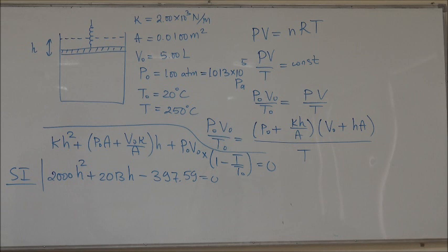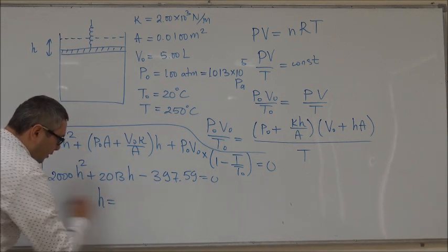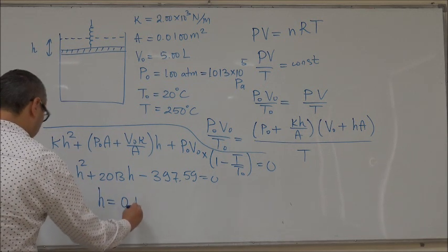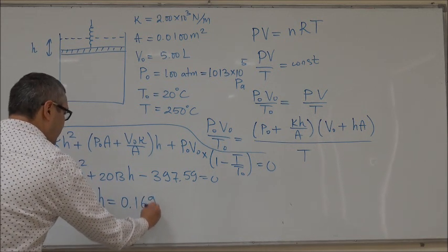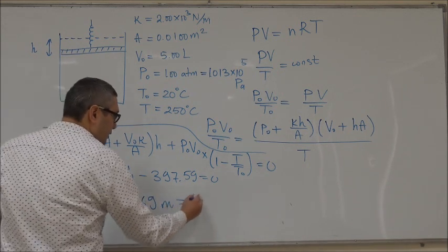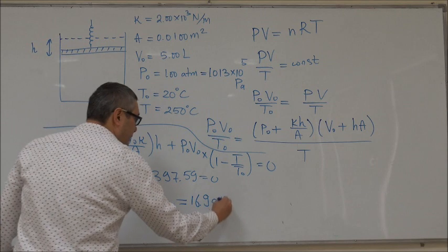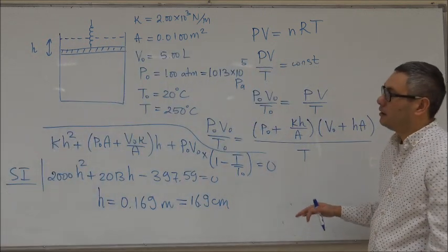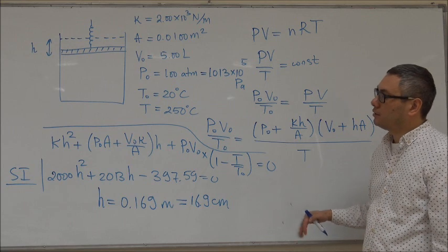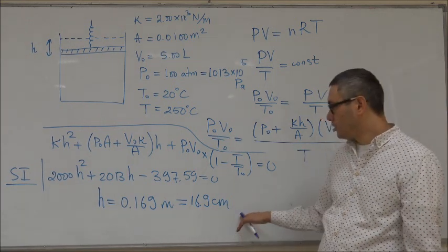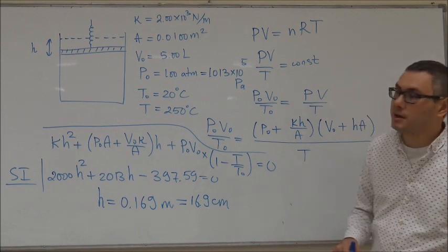Because it's a quadratic equation you will get two answers, but only one has physical meaning. So the value for H is 0.169 meters, or 16.9 centimeters. As a result of this expansion of the gas due to the temperature increase, the piston goes up by almost 17 centimeters.